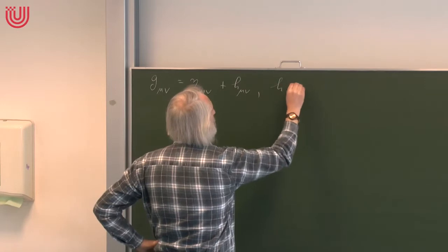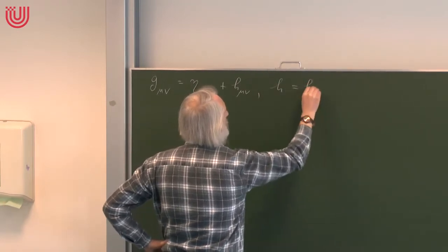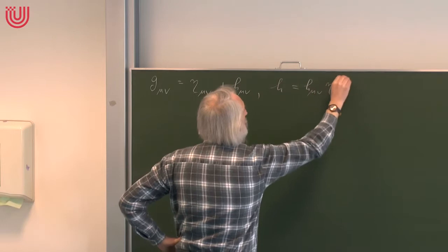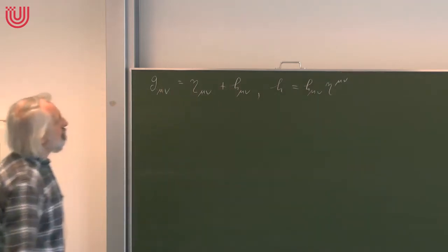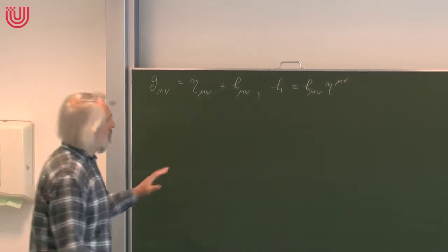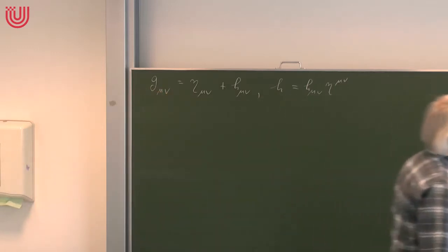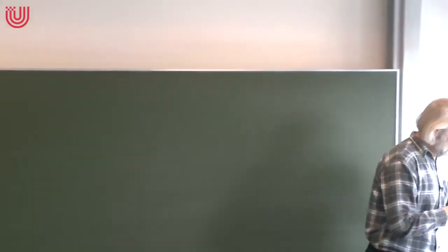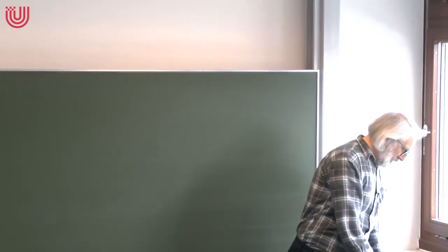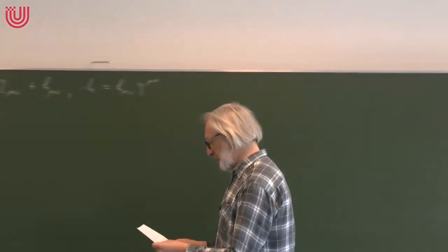We used the notation that we wrote h without an index for the trace, which is formed with the η_μν. Our convention is we raise and lower indices in this chapter with the η. I plugged this into the field equation and calculated it up to first order in h. There were several sign mistakes last time, so I checked it again — I hope what I write down now is correct.